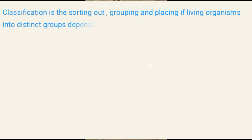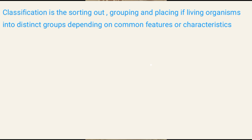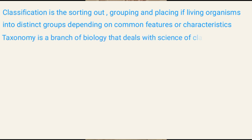Classification is the sorting out, grouping, or placing of organisms into distinct groups, depending on common features or characteristics. While taxonomy is a branch of biology that deals with the classification of living organisms.